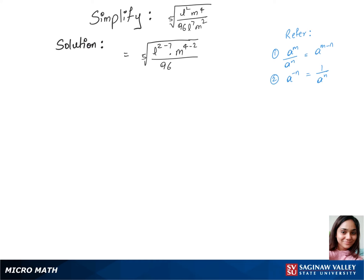Now in our next step, we have fifth root of—we can write L power 2 minus 7 is minus 5, times M power 4 minus 2 is 2, over 96. Now we can use rule 2.